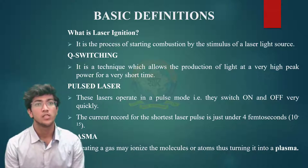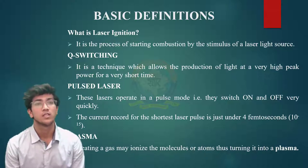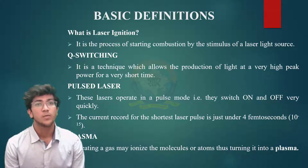Pulse lasers operate in a pulse mode — that is, they switch on and off very quickly. The current record for the shortest laser pulse is just under 4 femtoseconds. Plasma: heating a gas may ionize the molecules or atoms, thus turning it into a plasma.